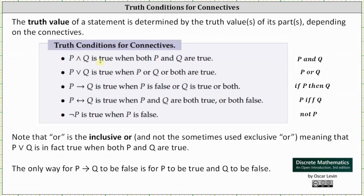P and Q is true when both P and Q are true. P or Q is true when P or Q or both are true. If P then Q is true when P is false, or Q is true, or both are true. P if and only if Q is true when P and Q are both true or both false. And finally, not P is true when P is false.